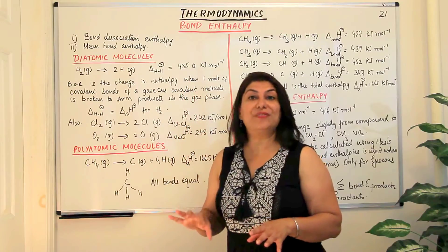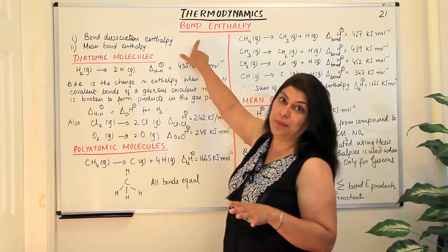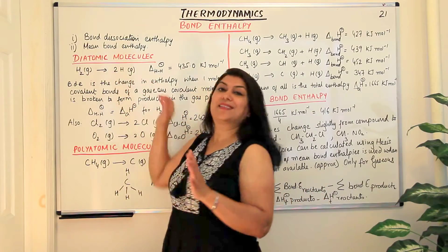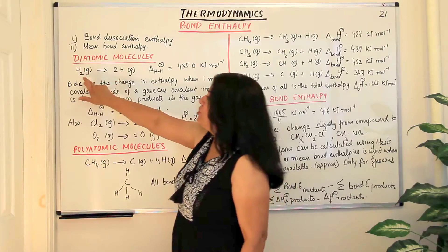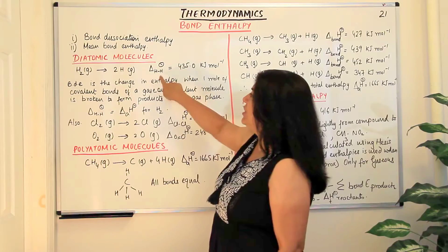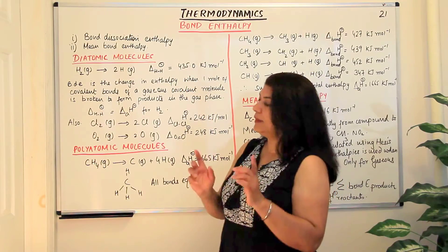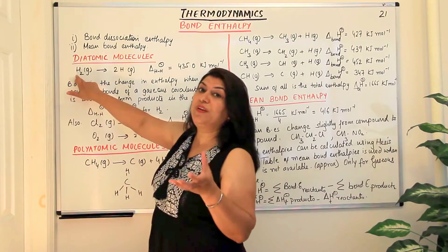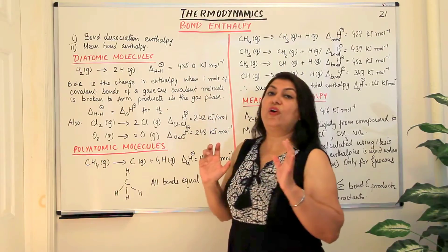The reason is that if the state were different, energy would be required to change to the gaseous state, and then that energy would be incorrectly included in the bond enthalpy calculation. Therefore, when talking of bond enthalpy, we take reactants and products in gaseous form so that we only consider the energy involved in formation or breaking of bonds. For hydrogen molecule breaking into two hydrogen atoms, both reactants and products should be gaseous. The bond dissociation enthalpy for the H-H single bond is 435 kJ per mole.